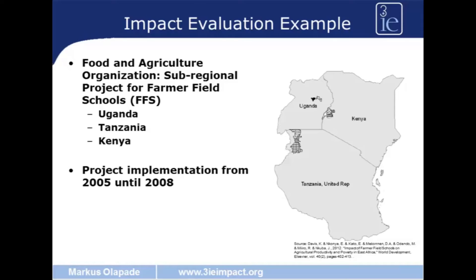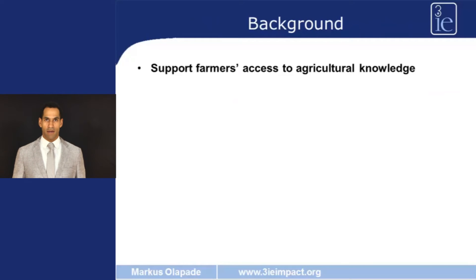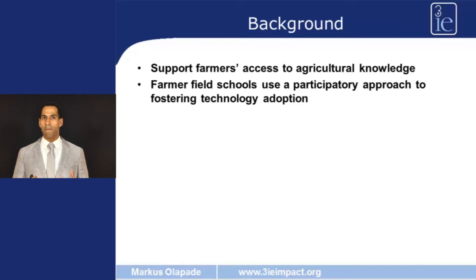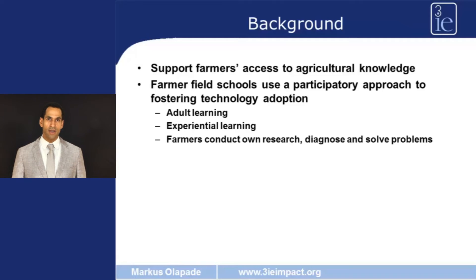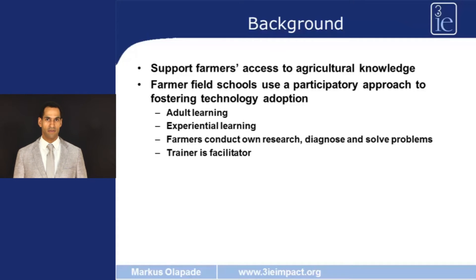This project was conducted in Uganda, Tanzania and Kenya and it was assessed by Davis and co-authors during the period of 2005 until 2008. Farmer field schools, similarly to standard extension services, provide agricultural knowledge to smallholder farmers, but they do so using a participatory approach combining adult learning and experiential learning. The farmers are put in a position where they assess problems and find solutions themselves, while the trainers serve merely as facilitators.